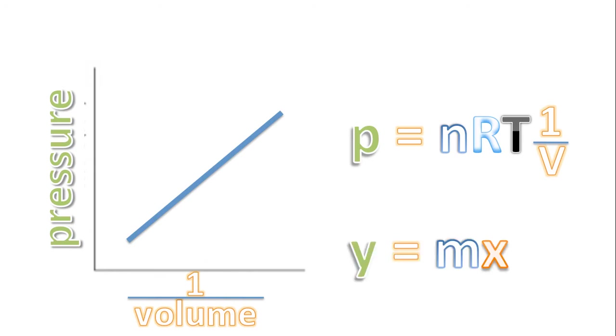Well, remember, a linear equation is given by the formula y equals mx. In this case, pressure is our y variable. 1 over volume is our x variable. And nRT—the number of moles times the gas constant times the temperature—is our slope.